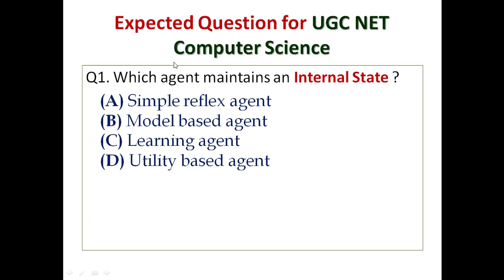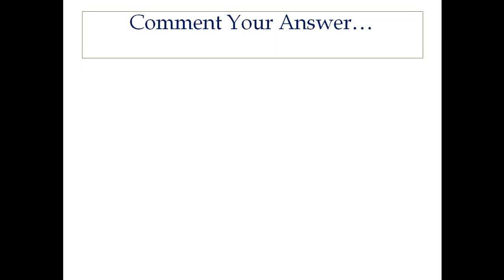I hope this question and solution is clear to you. Now I'm going to give you an expected question for the coming UGCnet in Computer Science: which agent maintains an internal state? First option: simple reflex agent. Second: model based. Third: learning. Fourth: utility based. If you can solve this question, post your answer in the comments. I am giving the answer in the description and also in the top-most comment. I hope you enjoyed this lecture. I will come with new expected questions in later lectures. Till then, take care. Bye bye.